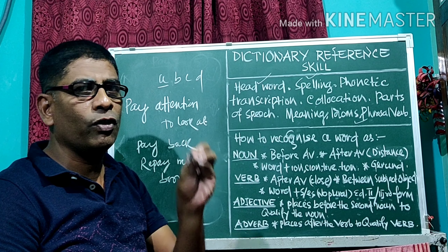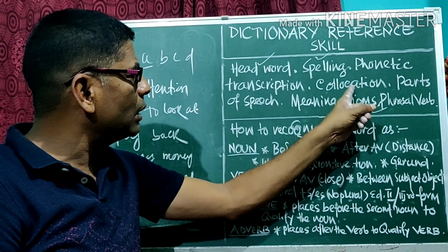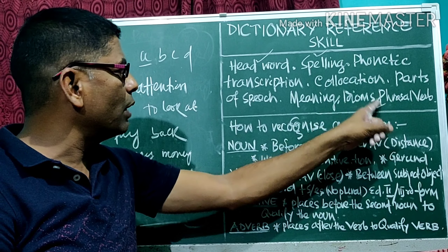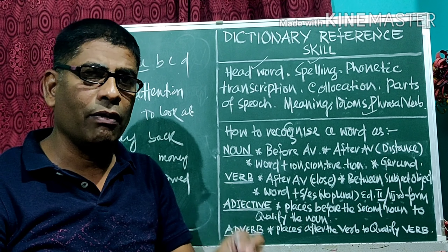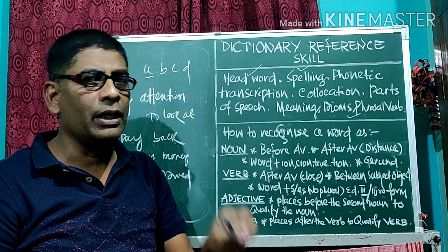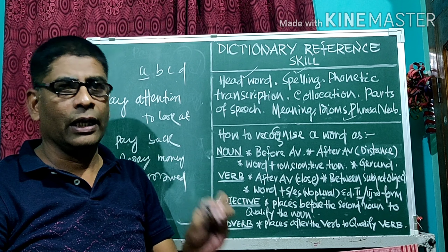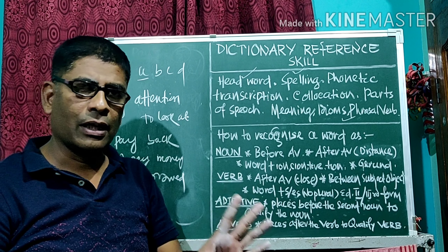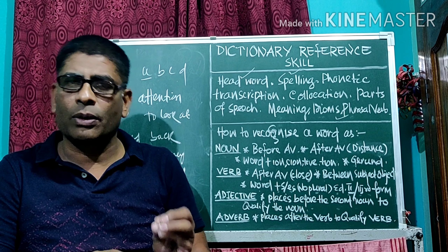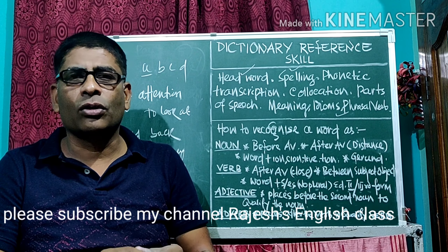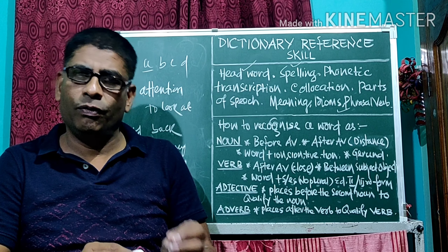This is all about dictionary reference skill — we can get so many benefits from the dictionary. The dictionary is not meant only for getting meanings; at the same time, we can get phonetic transcription, collocation, meanings of idioms, phrasal verbs, and parts of speech — everything. Being a student or a person, whenever we use the dictionary, we should know these skills to make the most use of it. Thank you. Please do subscribe to my channel, Rajas English Class, to get more things related to English grammar and English courses in coming days.